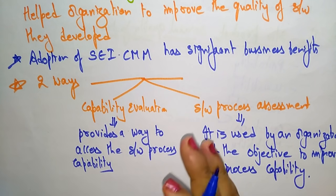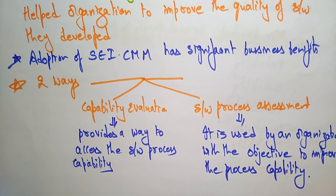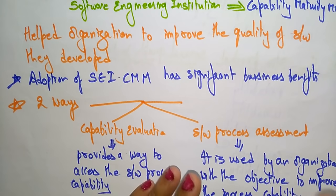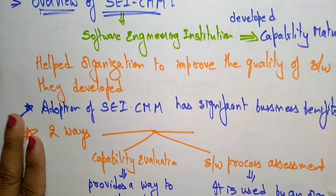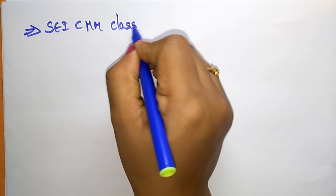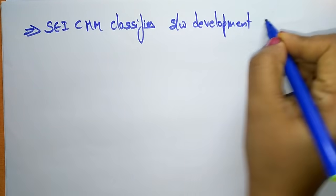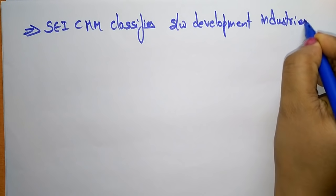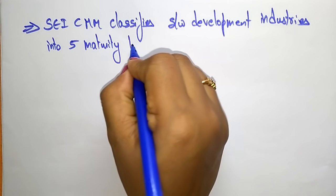So the SEI CMM can be used in two ways — either you can go for the capability evaluation of the product, or the software process assessment. Based on that, the project and product quality, they are going to give some standards to that organization. SEI CMM classifies software development industries into five maturity levels.